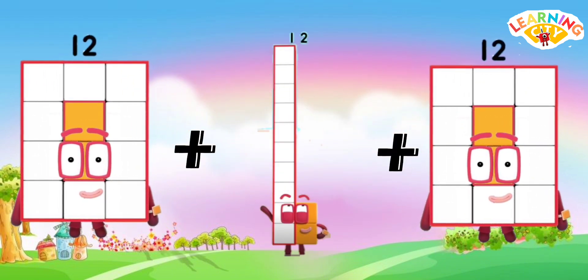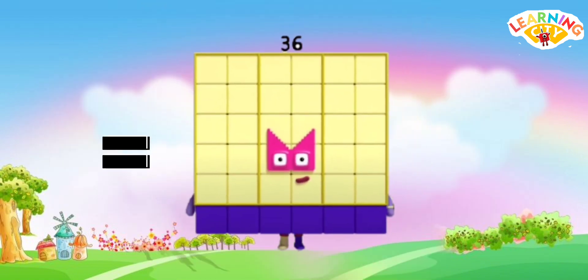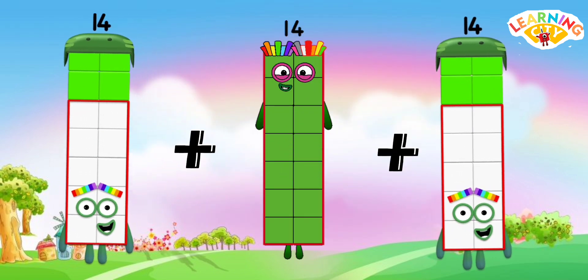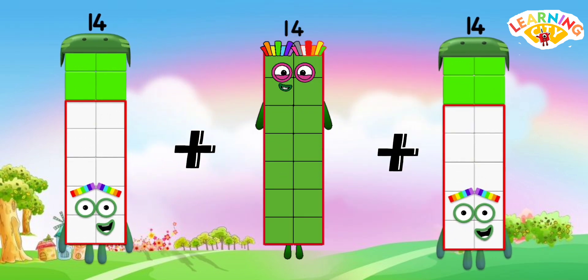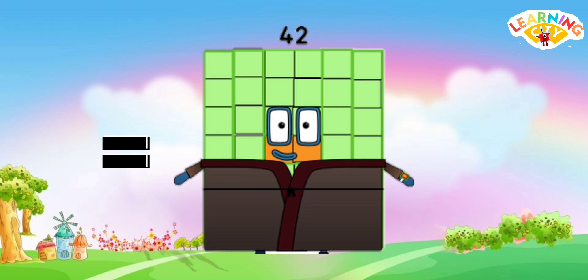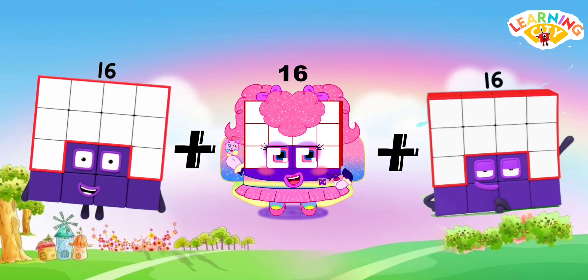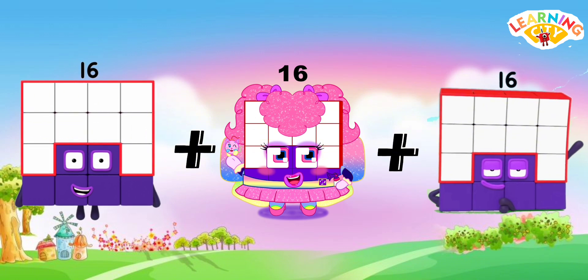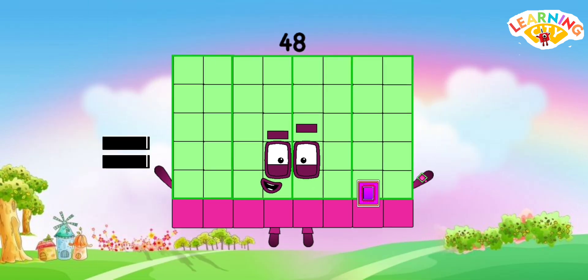12 plus 12 plus 12 equals 36. 14 plus 14 plus 14 equals 42. 16 plus 16 plus 16 equals 48.